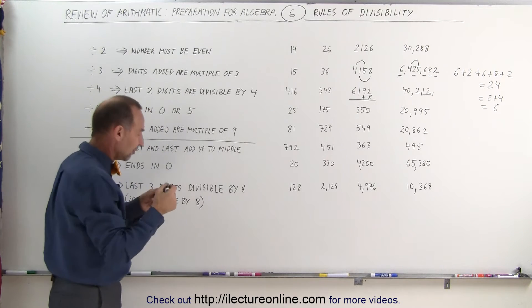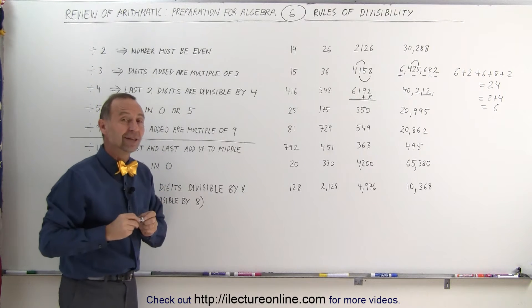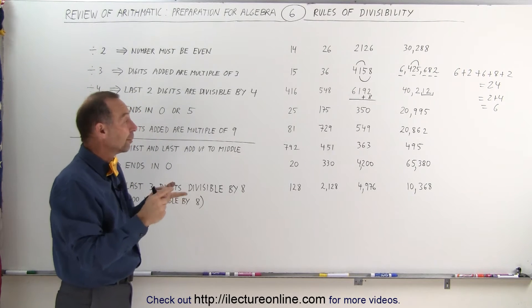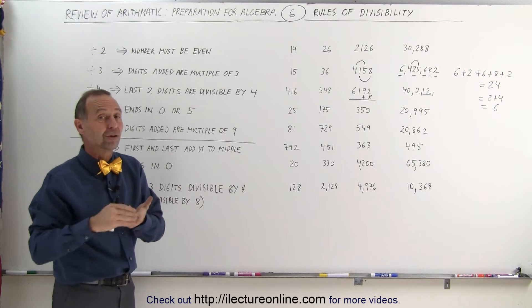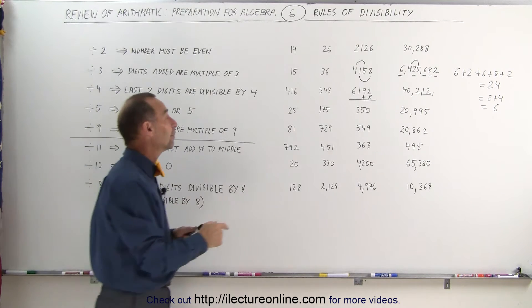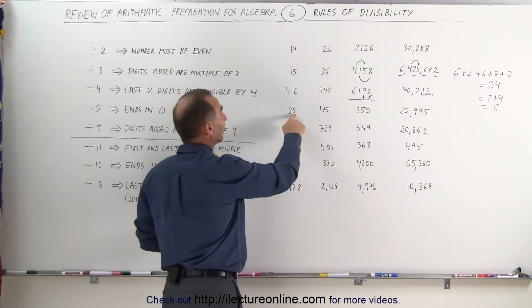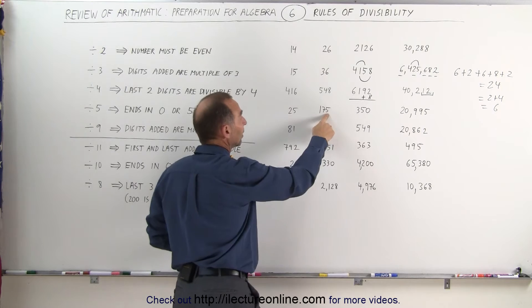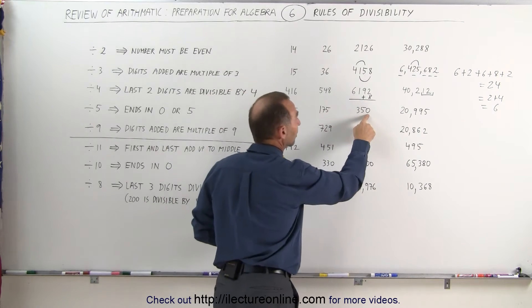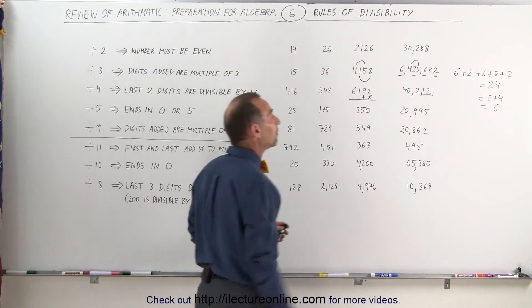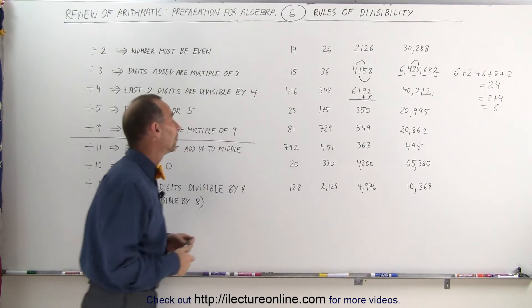How about 5? That's always really easy. All we have to look for is if the number ends in a 5 or a 0 — the whole number can be divided by 5. This can be divided by 5, so can this, so can this, and so can this, no matter how big the number is.